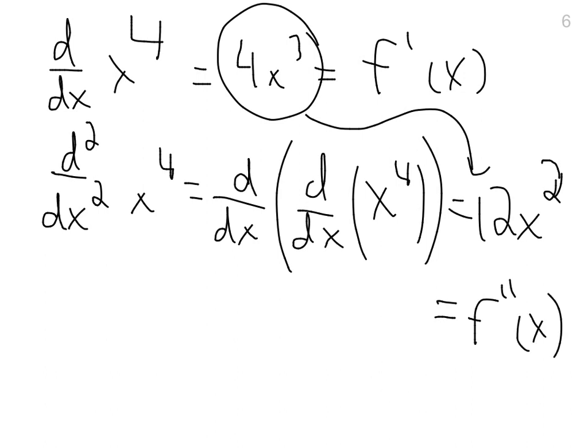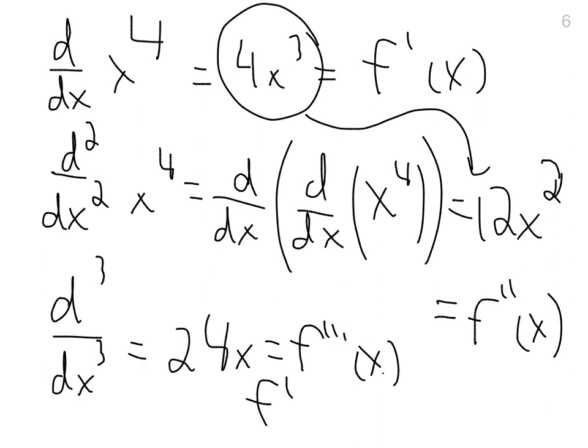You could keep going, I could write d³/dx³, and that would be 24x, and you can either write this as f triple prime of x, or once you get higher than 3 or 2, usually what you end up doing is you write f to the fourth or fifth, or n of x, so you just write the number there. But that's just some quick notation for further derivatives.